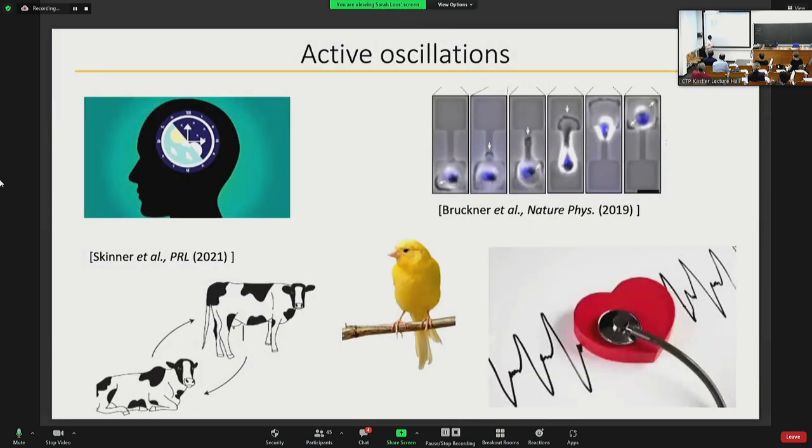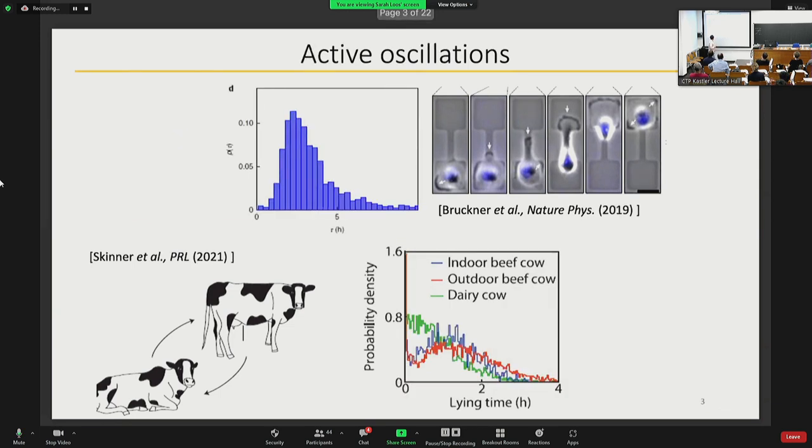In nature there are many examples of systems which oscillate actively, meaning that they develop oscillating dynamics by consumption of energy and production of entropy. You can find examples in circadian rhythm, heartbeating, the modulation of canary singing, and also recent examples on the dynamics of sitting and standing of milk house and cell crawling in wet environments. What we've learned from previous talks is that whenever you coarse grain these types of dynamics, you end up with systems which are non-Markovian in the sense that the waiting times between two states satisfy non-monotonous waiting time distributions.